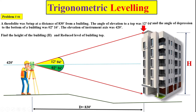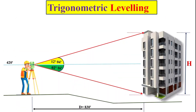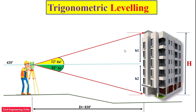As you can see from this picture, if we take the upper portion of the instrument axis as h1 and the lower portion as h2, then adding h1 and h2 together we can get the total height of the building. Also, if we take the instrument axis elevation and add h1, we can get the reduced level of the top of the building.